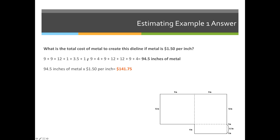So all these first numbers, they're from the perimeter. We've already done that. But now to get the total amount of metal, we must add all the interior lines, which is another 12, 9, and 3.5. So the total amount of metal needed for this die is 94.5 inches.